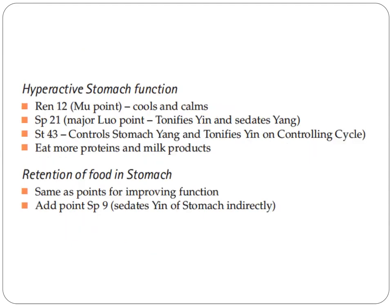For hyperactive stomach function, we use REN12, the mu point, which calms and sedates. Spleen 21, the major luo point, tonifies yin and sedates yang. Stomach 43 controls and tonifies stomach yin on the controlling cycle. For retention of food in the stomach, use the same points for improving function, and add Spleen 9 to sedate the dampness of the stomach indirectly.